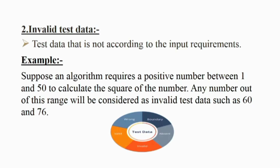A type of test data that is not according to the input requirements of an algorithm is called invalid test data. It is important that the algorithm handles invalid data properly and shows relevant messages. For example, if an algorithm requires a positive number between 1 and 50, any number out of this range — such as 60 or 76 — is invalid. The algorithm should notify the user that the input is wrong.